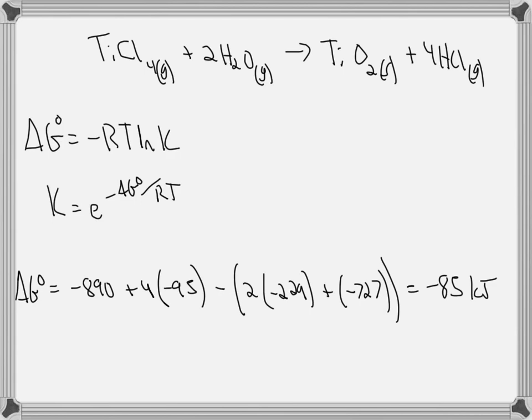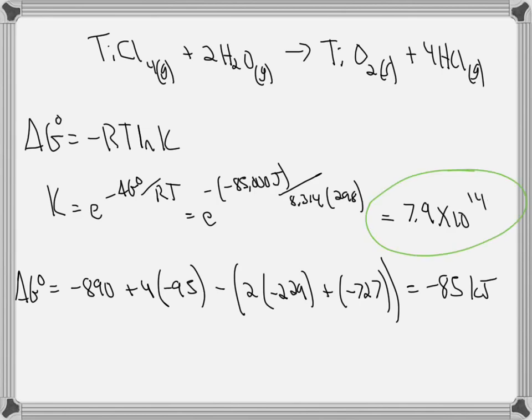When using this equation, however, it needs to be in Joules, so that's going to be negative of negative 85,000 Joules divided by R, 8.314, and T, 25 degrees Celsius is 298 Kelvin, and I get a K value of 7.9 times 10 to the 14. I hope that helps.